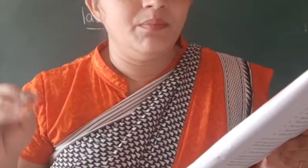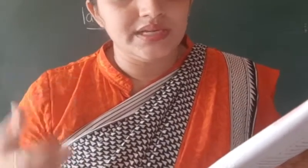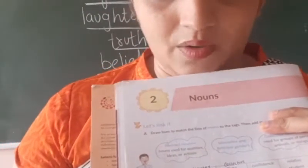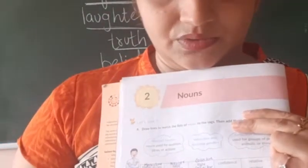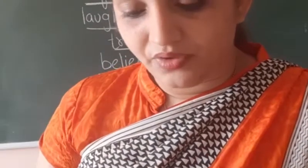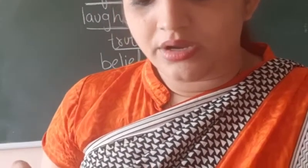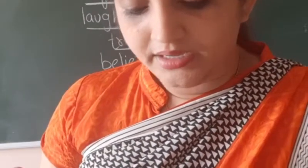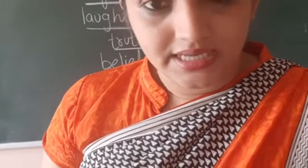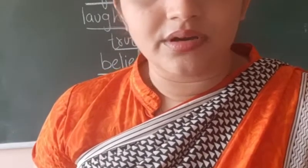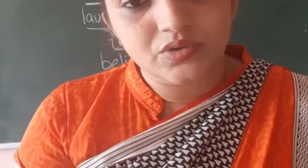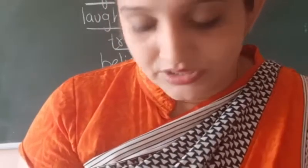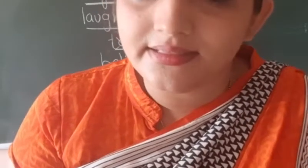Then add three more nouns to each list — means you have to add three more nouns in these gaps. Just for example, first is father-in-law, heroine, drake, ave, king. So this all are which noun? This all are gender nouns. So you have to add gender nouns in this.